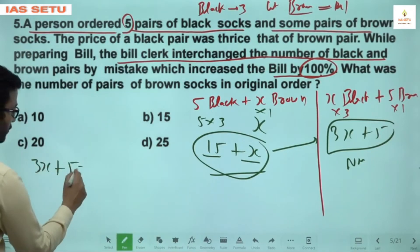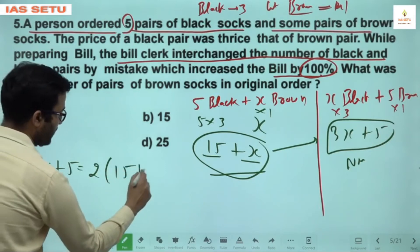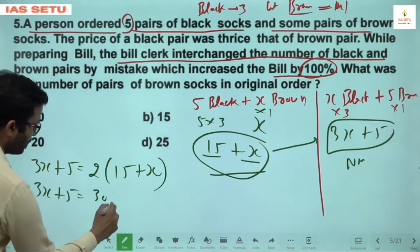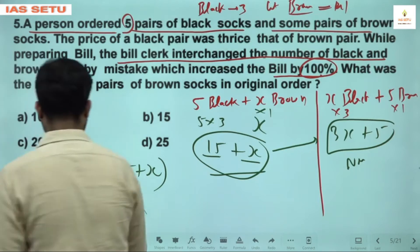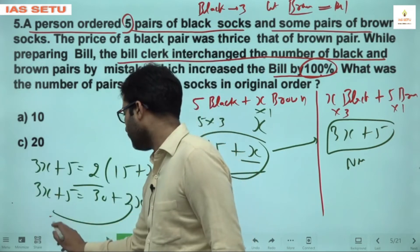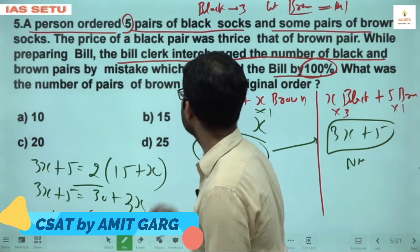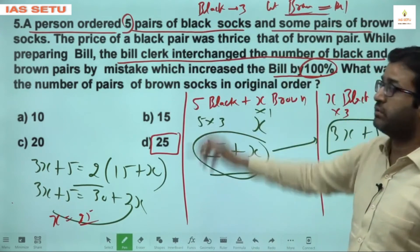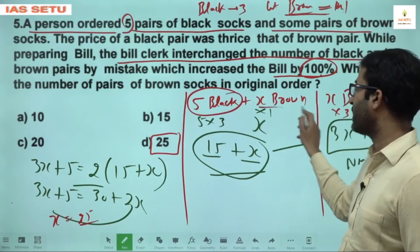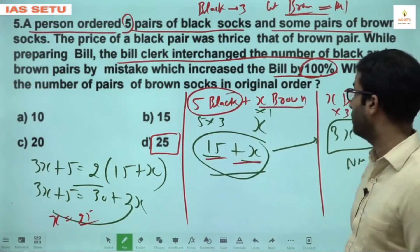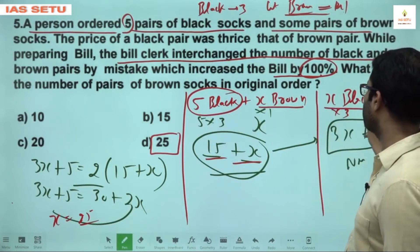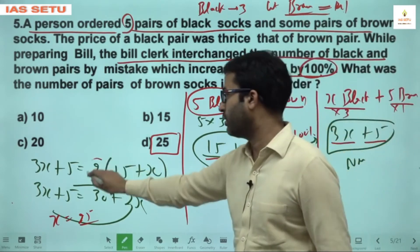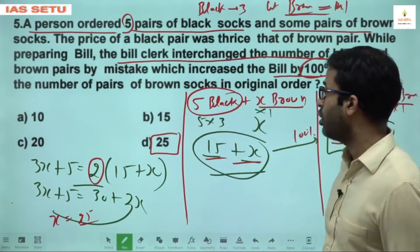So in the original order there were 25 pairs of brown socks. To recap: original bill = 15 + X, new bill = 3X + 5, and 3X + 5 = 2(15 + X) gives X = 25. Question 5 answer is D.